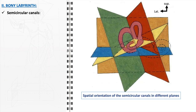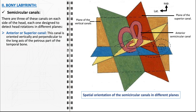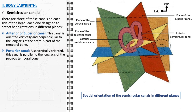Within the bony labyrinth, the semicircular canals stand as key components for maintaining balance and spatial orientation. There are three of these canals on each side of the head, each designed to detect rotational movements of the head in different planes. The anterior or superior canal is oriented vertically and perpendicularly to the long axis of the petrous temporal bone, allowing it to detect head movements like nodding. The posterior canal, also oriented vertically, runs parallel to the long axis of the petrous temporal bone, making it sensitive to head tilts such as tilting the head towards the shoulder. It works in conjunction with the superior canal to provide comprehensive sensory input for vertical head movements.